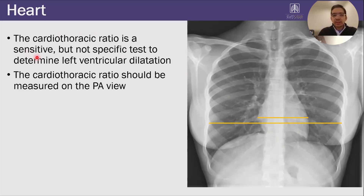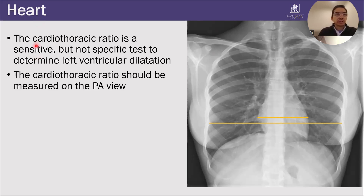You should only measure this on the PA view when a patient has a deep breath in. You can't really do it well on an AP view if the patient is supine because you're going to be over-calling it.